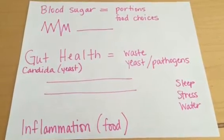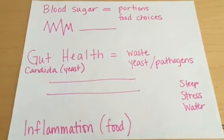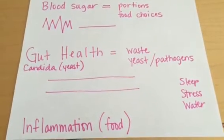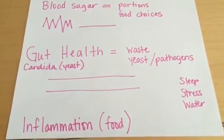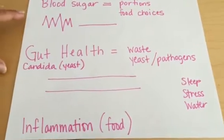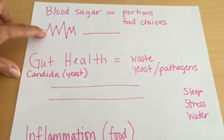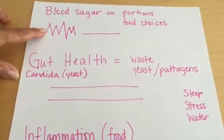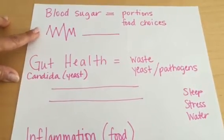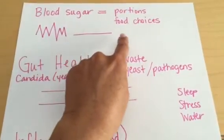With Plexus and how it works to balance the blood sugar and how that impacts our ability for a healthy weight, I will explain it this way. Typically our blood sugar looks like this, up and down, up and down. When we keep our blood sugar consistently stable, like this flat line here...